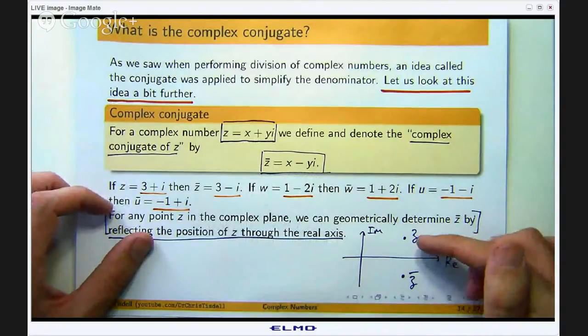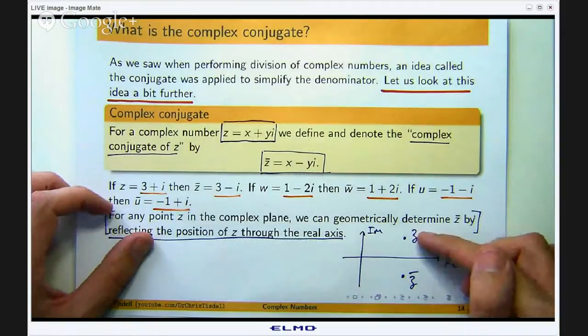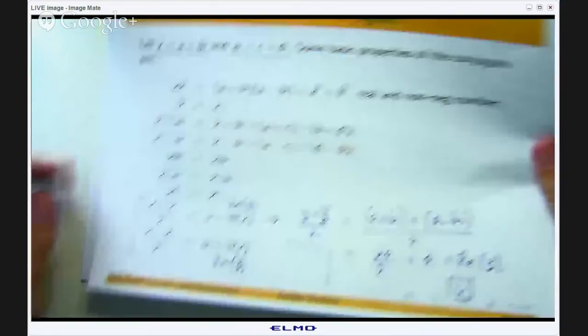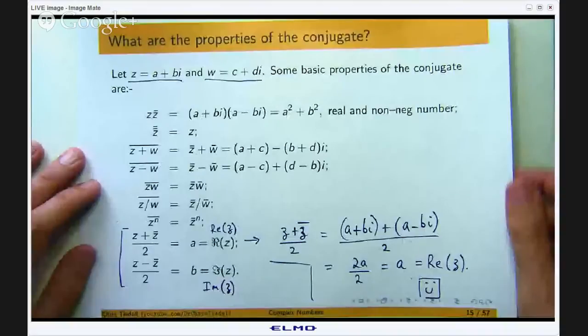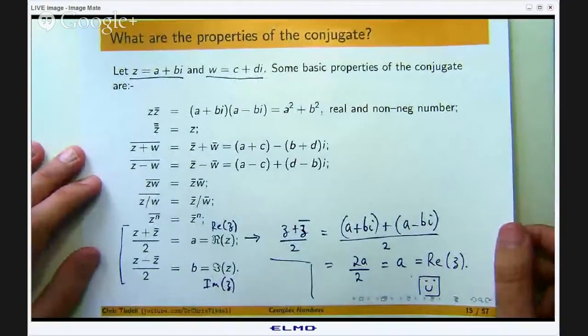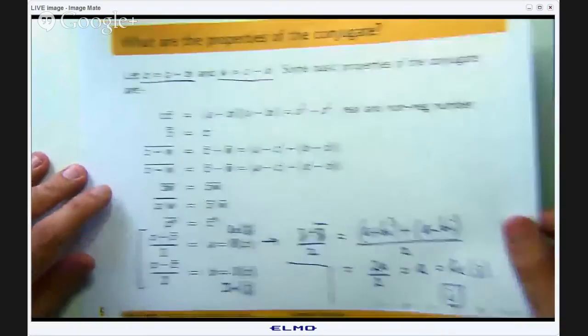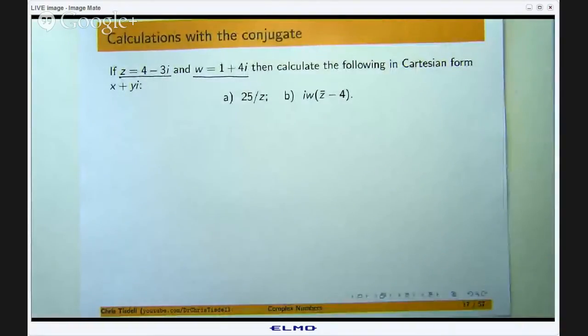And geometrically speaking if you have a point in the complex plane or the Argand diagram and you want to know where the conjugate is, then you just reflect the point in the real axis. There are all these properties of the conjugate.